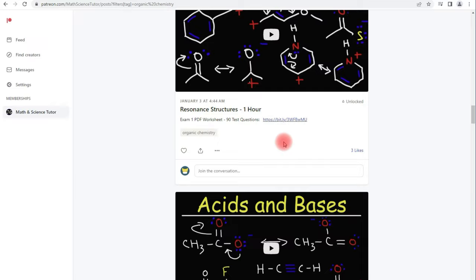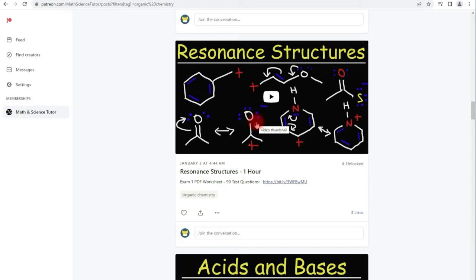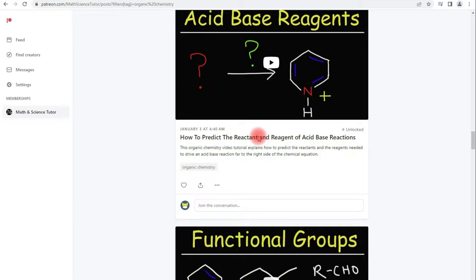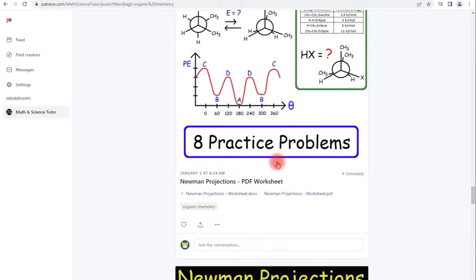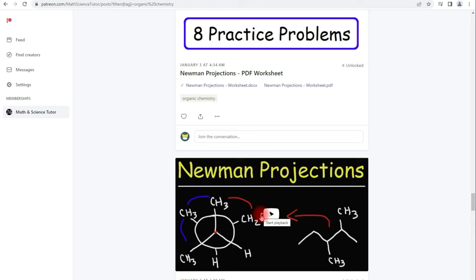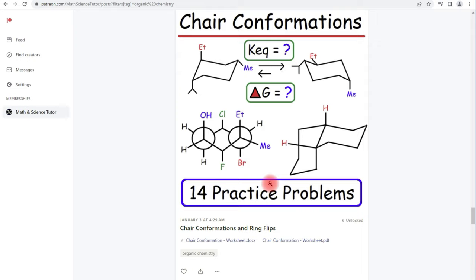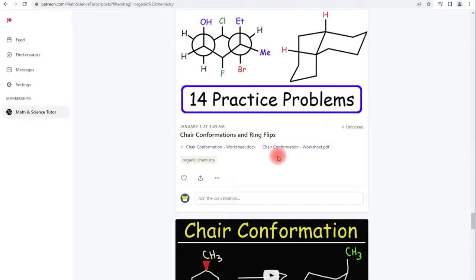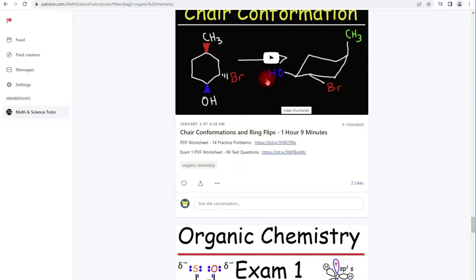I have some other videos as well: hybridization, resonance structures. The free version of this video is about 20 minutes long on YouTube, but the full-length version is about an hour long. Acids and bases, functional groups, Newman projections. The worksheet contains all of the problems in the full-length video. Some of you have asked for worksheets. You prefer to work through the problems that way instead of watching a long video. I have it for not all of my videos, but some of them. We have chair conformations.